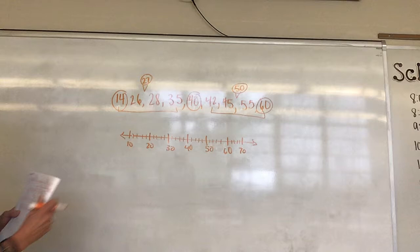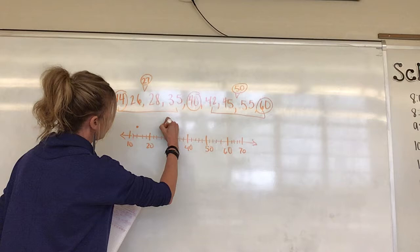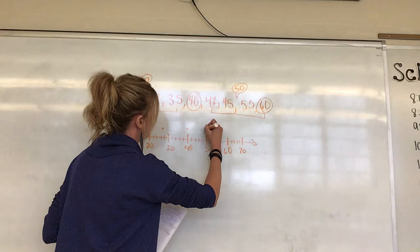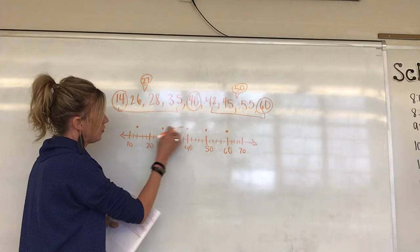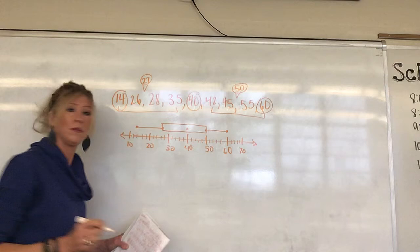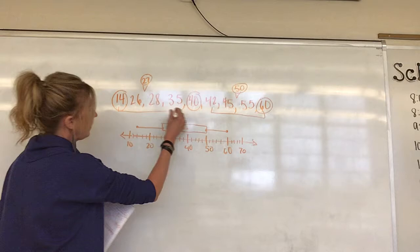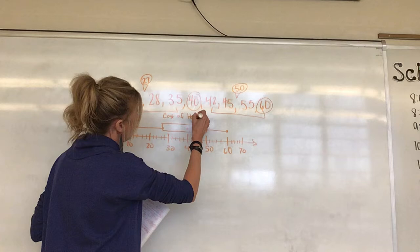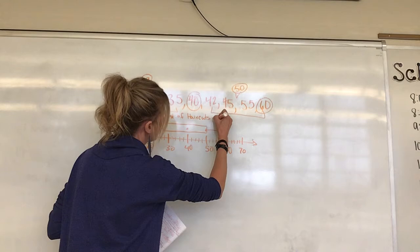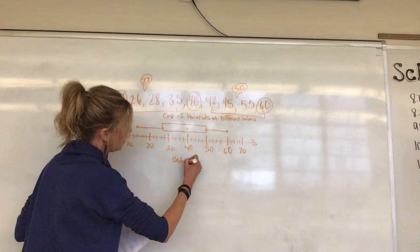Let's graph our key values: 14 is our first dot, then 27 falls between 26 and 28, our median is 40, upper quartile is 50, and greatest is 60. Now we have our five key values. We'll box them and then do our whiskers. Above the graph we should always label what we're doing — cost of haircuts at different salons — and below we label: cost in dollars.